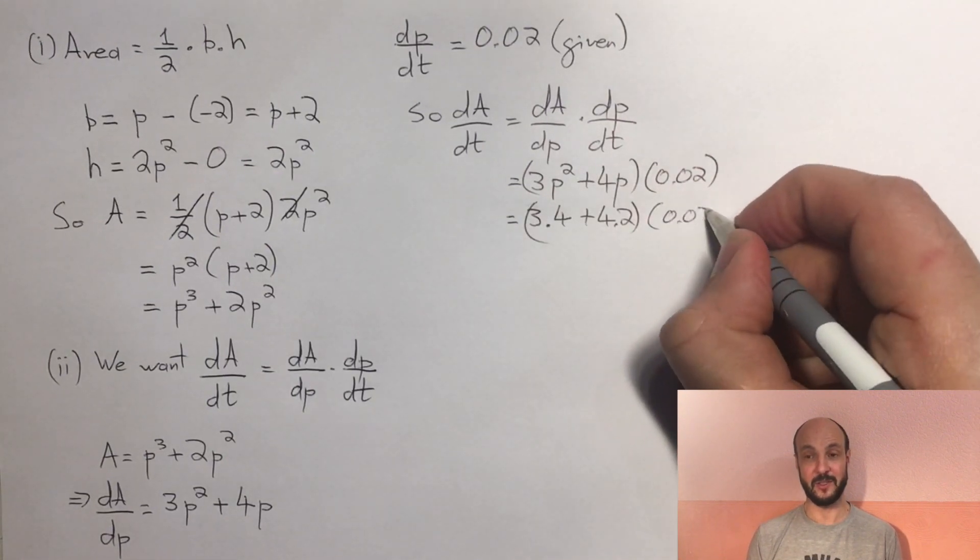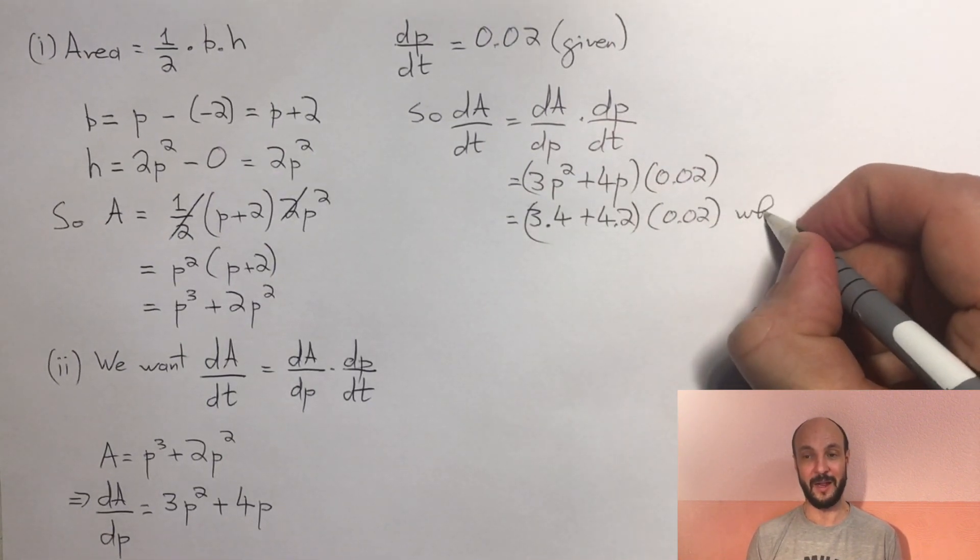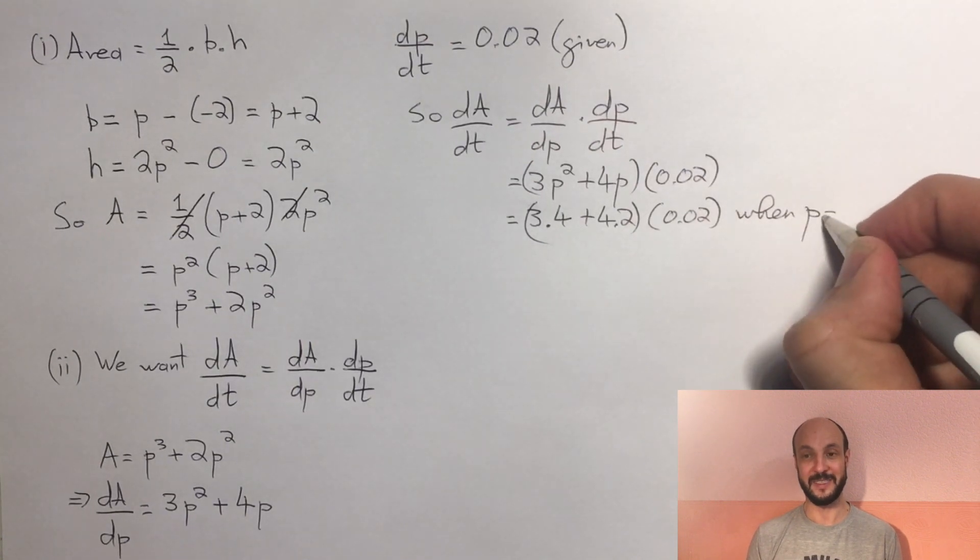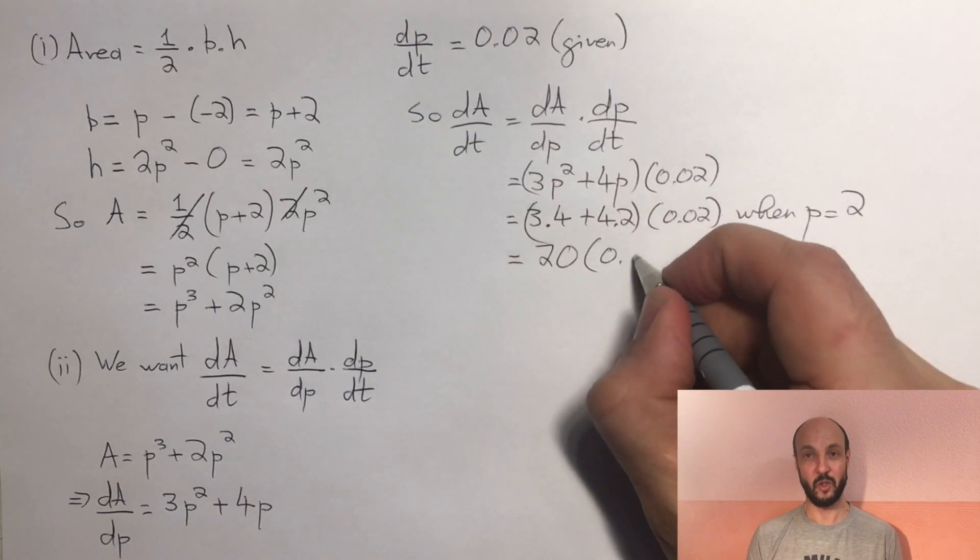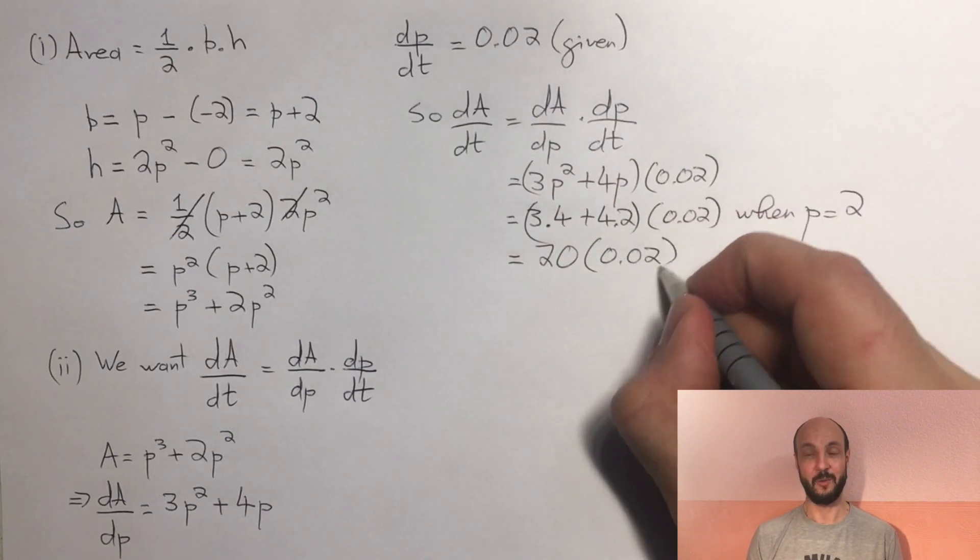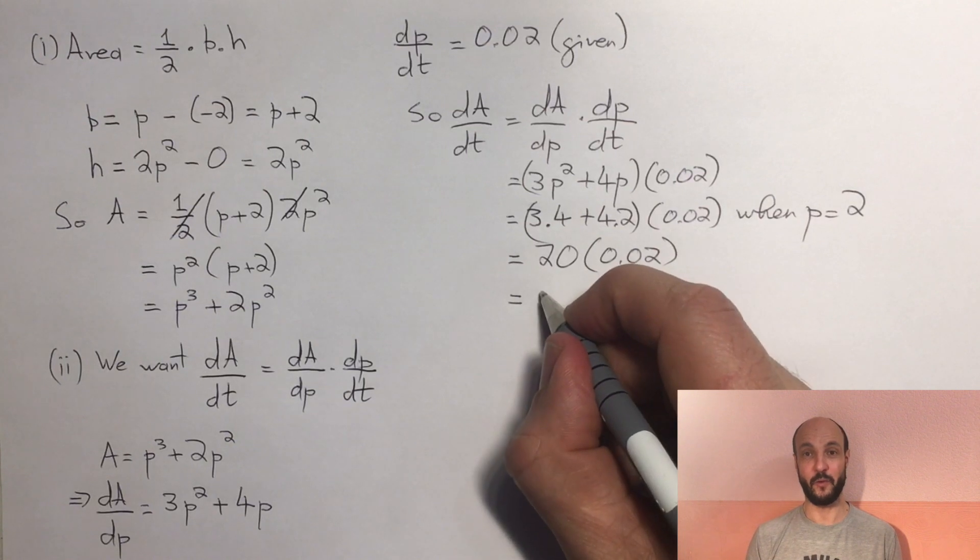So we've got 3 times 2 squared, 3 times 4, which is 12, plus 4 times 2, which is 8, so that's 20 altogether, times by 0.02. So 2 hundredths of 20, which is 40 over 10, or 0.4.